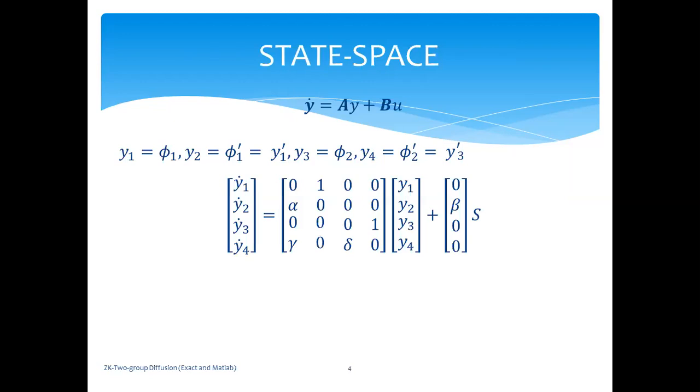First thing, what we can go through is the state space representation, where we want to put the two second-order ODEs into four first-order ODEs of this form: y_dot = Ay + Bu. Now, u is the control, it's the input, and y, the state variables, are the outputs. If you define y1 as the fast flux and y3 as the thermal flux, and you define y2 as φ1' and y4 as φ2', then you're able to have y1 as φ1, y2 as φ1' which is also y1', and similarly y3 is φ2, which means that y4 is φ2' which is y3'.